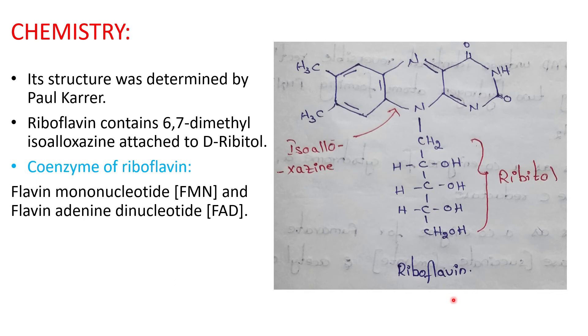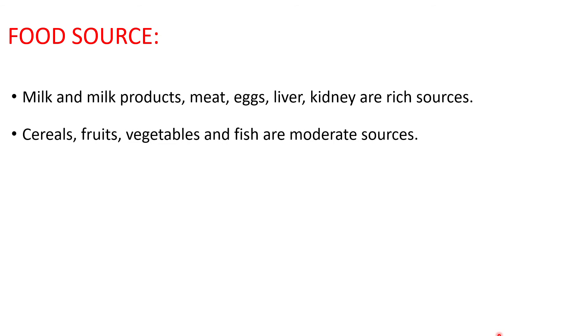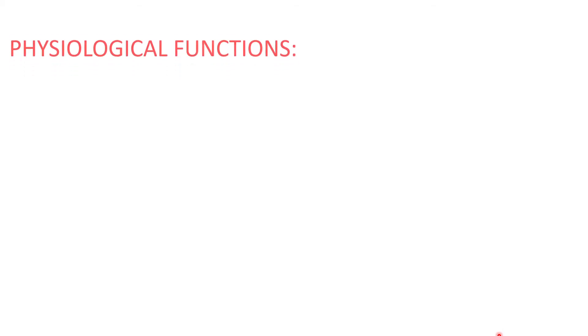Regarding food sources of riboflavin: milk, milk products, meat, eggs, liver, and kidneys are rich sources. Cereals, fruits, vegetables, and fish are moderate sources. Leafy vegetables are also a good source of Vitamin B2.